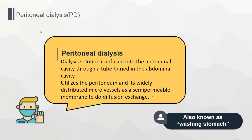First of all, what is Peritoneal Dialysis? There are two ways to operate kidney dialysis: one is Hemodialysis, and the other is Peritoneal Dialysis. Peritoneal Dialysis is one of the treatments for chronic kidney disease. Dialysis solution is infused into the abdominal cavity through a tube buried in the abdominal cavity. It utilizes the peritoneum and its widely distributed microvasculature as a semi-permeable membrane to perform diffusion exchange, and eventually removes unnecessary water and waste through the drainage tube.